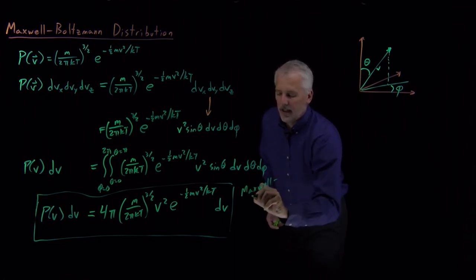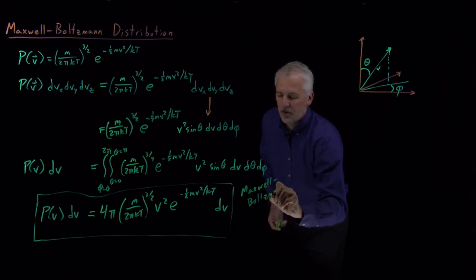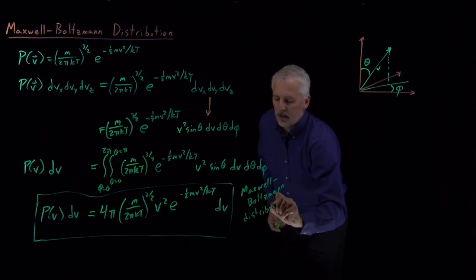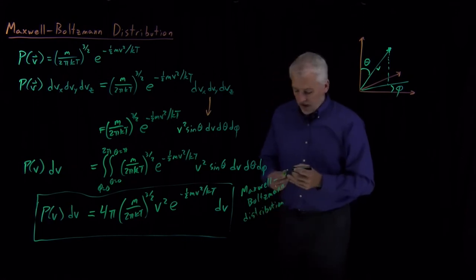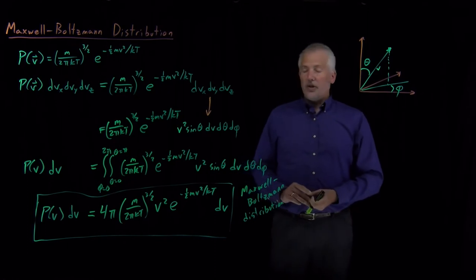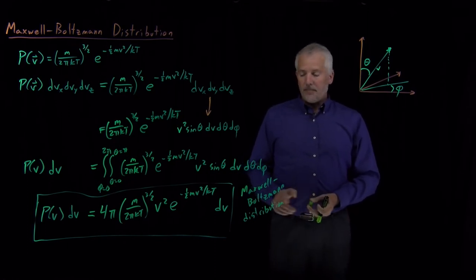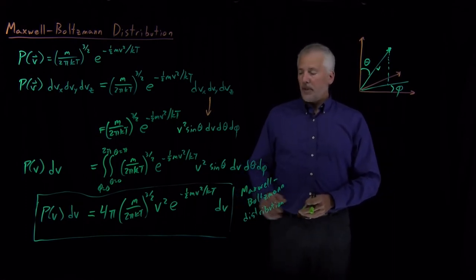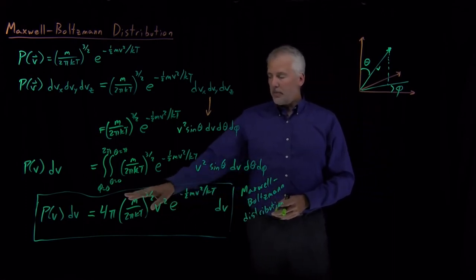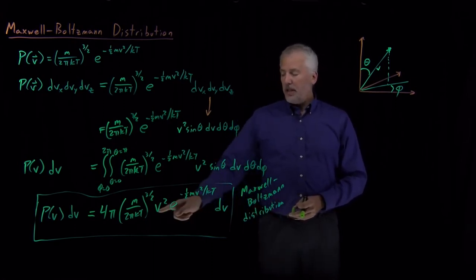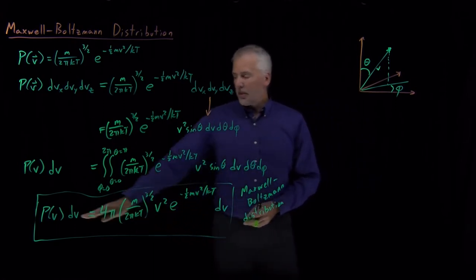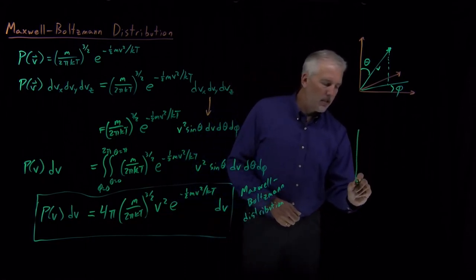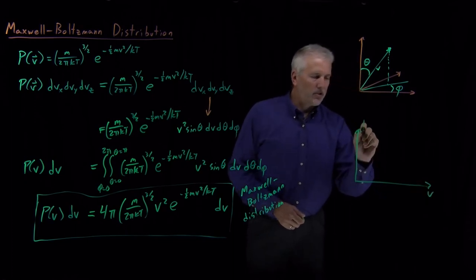This result is useful enough that it gets a name: the Maxwell-Boltzmann distribution. That's because it's a combination of two contributions. Boltzmann tells us how to calculate probabilities — e to the minus energy over kT — and Maxwell's contribution was applying this specifically to molecular speeds. If we want to quantitatively know the probability of having a particular speed or range of speeds, this is the distribution we use.